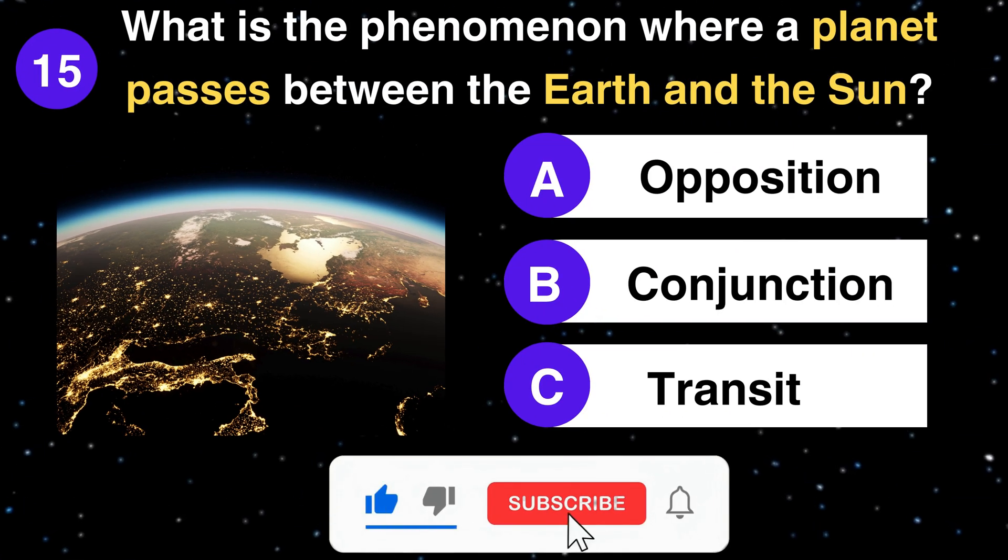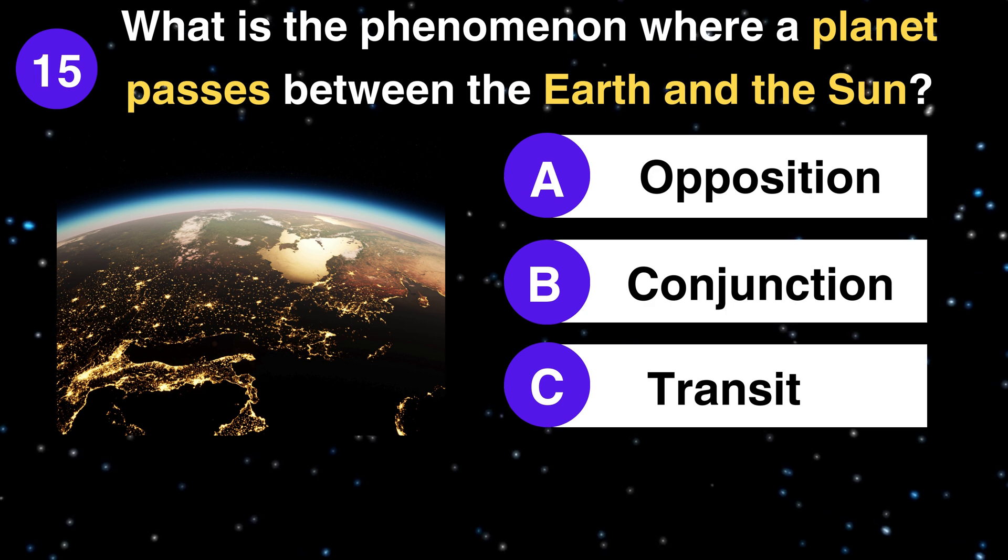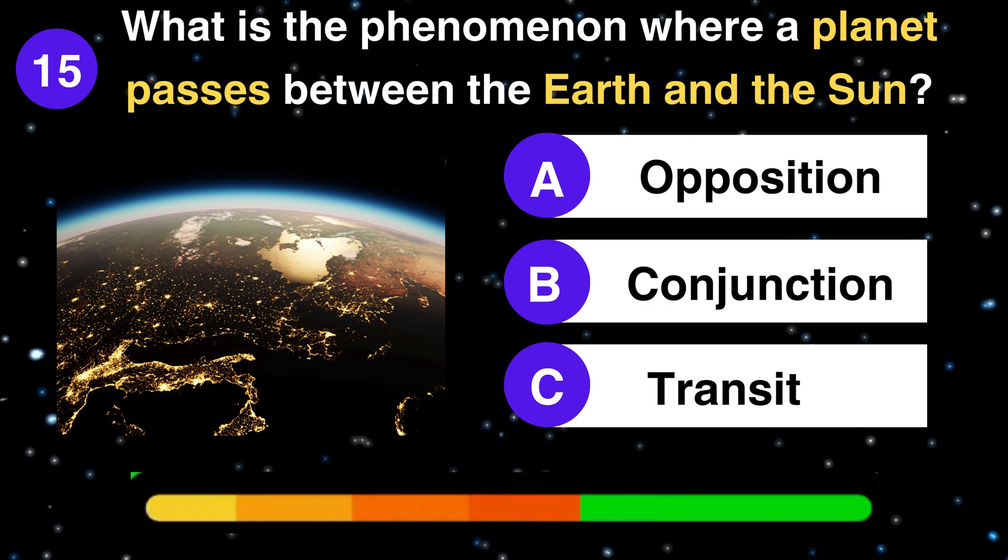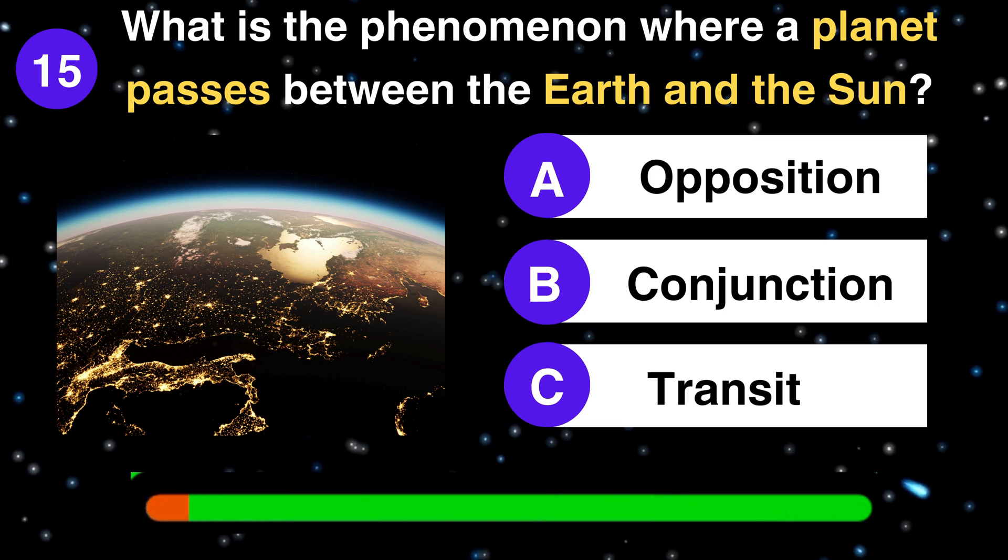What is the phenomenon where a planet passes between the Earth and the Sun? Opposition, conjunction, or transit? Transit.